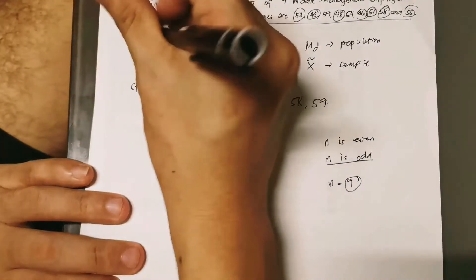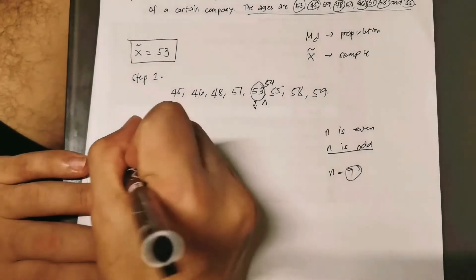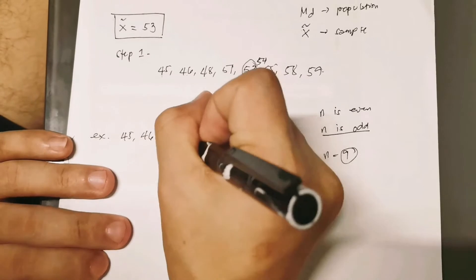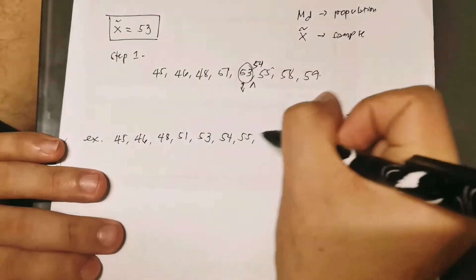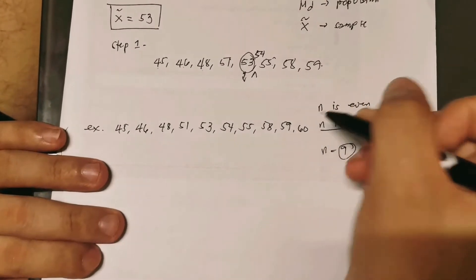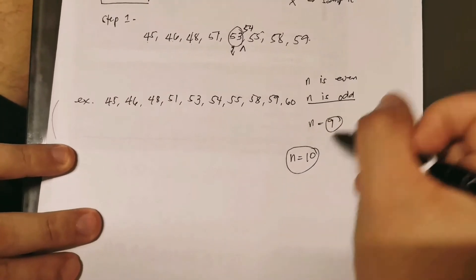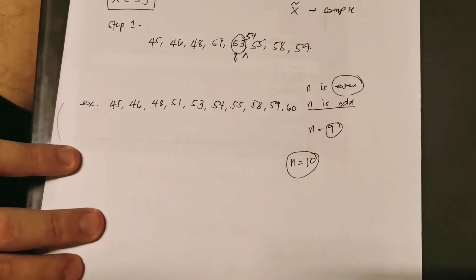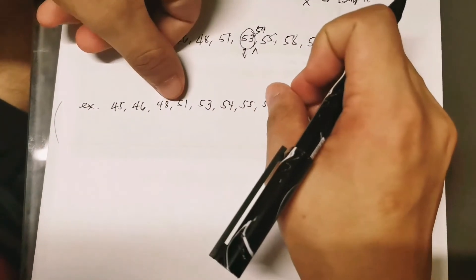Another case is, for example, we array the data. Let's say you have 45, 46, 48, 51, 53, 54, 55 years old, 58 years old, 59 years old, and let's say our retiring employee is 60. In this case, n here is 10, so it's already under even. We have an even number of observations.